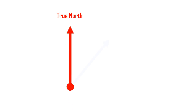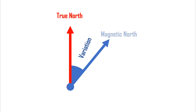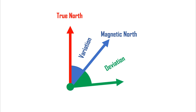So, to recap: true north corrected for the local variation gives you magnetic north, which again corrected for the compass deviation gives you compass north, which is what you can actually read on your compass.